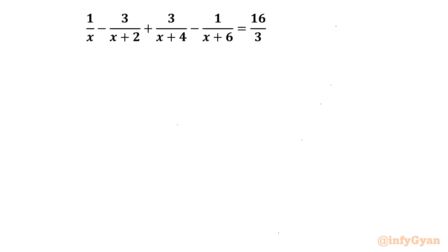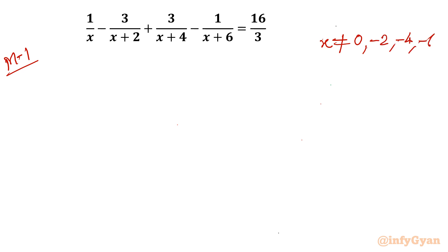I will solve this problem in two different ways. Let's get started with method number 1. I will begin with the domain of the equation. The denominator cannot be 0, so x cannot be 0, negative 2, negative 4, or negative 6. These are the restricted values.